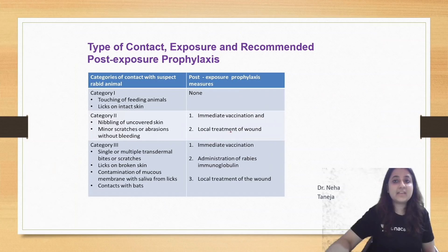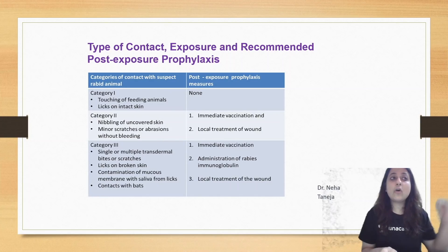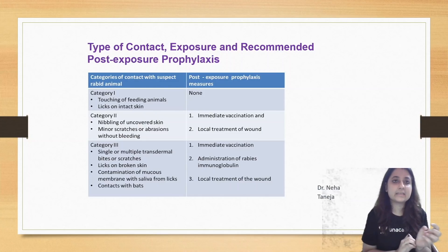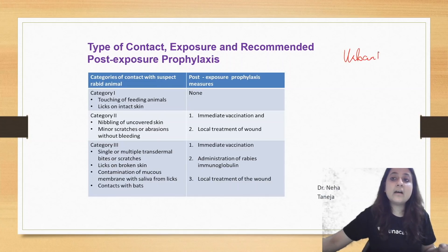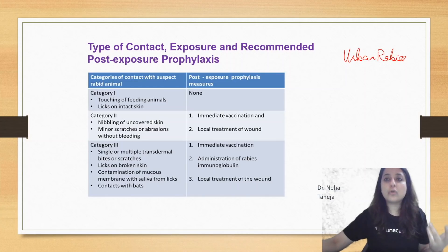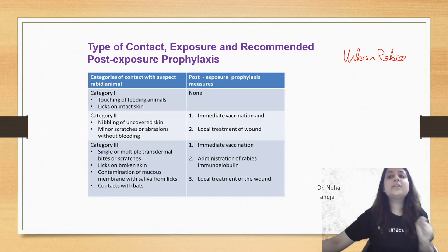Let us talk about rabies. Questions are there on post-exposure, pre-exposure, and re-exposure prophylaxis. Most important is post-exposure, from which a lot of questions come. In India, urban rabies is very common — that means the person has been bitten by a dog. The National Rabies Control Program tells us that if anybody has been bitten by a dog or any other animal, we immediately have to provide prophylaxis, known as post-exposure prophylaxis.